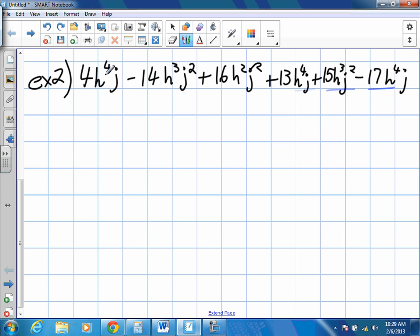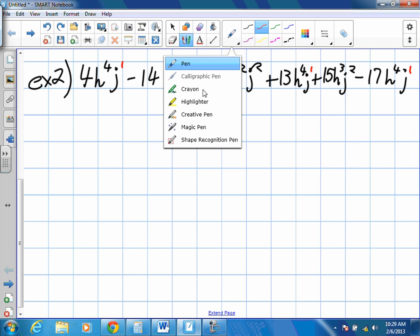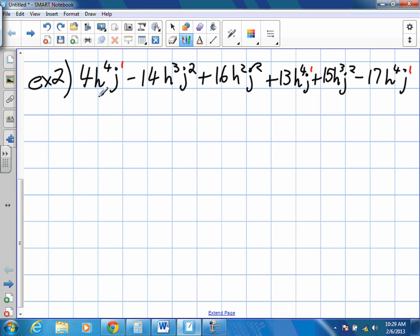So since these variables are all multiplied by each other, this really says 4 times h to the power of 4 times j. We need to have variables, the same two variables with the same two exponents. So just to make things a little clearer, anytime we have a variable with no number, I'm just going to put the number 1 up there. There's a 1, and there's a 1. So I need to look for variables that have the exact same exponents. So I'm looking for a pair of variables that say h to the power of 4 and j to the power of 1.